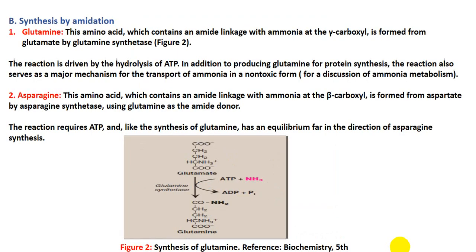Another route is synthesis by amination, like glutamine and asparagine. Glutamine is synthesized from glutamate by forming an amine linkage at the gamma carboxyl group. Looking at the alpha, beta, gamma carbons, this carboxyl group at the gamma carbon forms an amine linkage with ammonia. This is the major mechanism for transport of ammonia and for detoxifying the toxic form of ammonia.